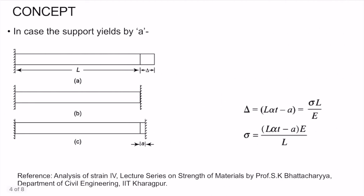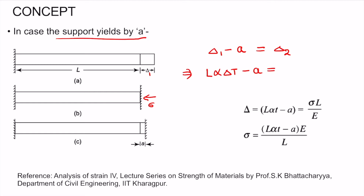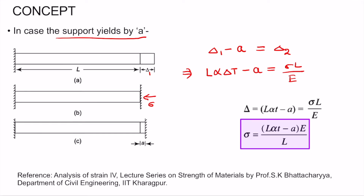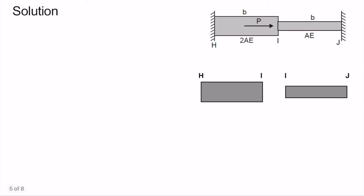In one more case, if the support yields by an amount 'a', the stresses develop such that the deformation due to stress only needs to balance delta 1 minus a, not the entire delta 1. So we equate L times alpha times delta T minus a to sigma times L divided by E. From this, the value of sigma is found to be (L alpha delta T minus a) times E divided by L.